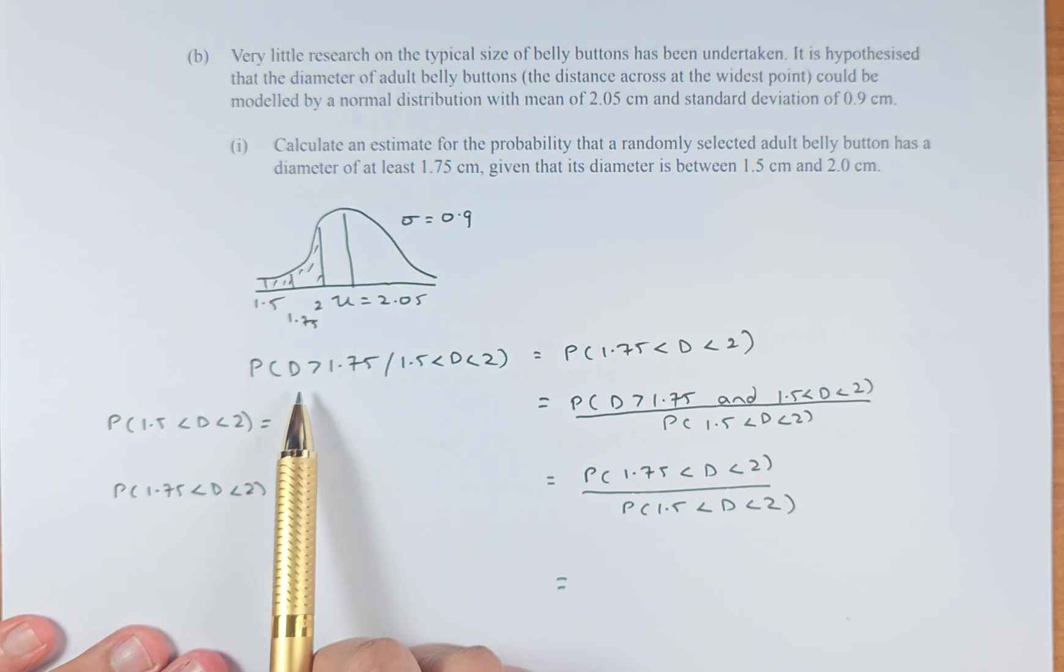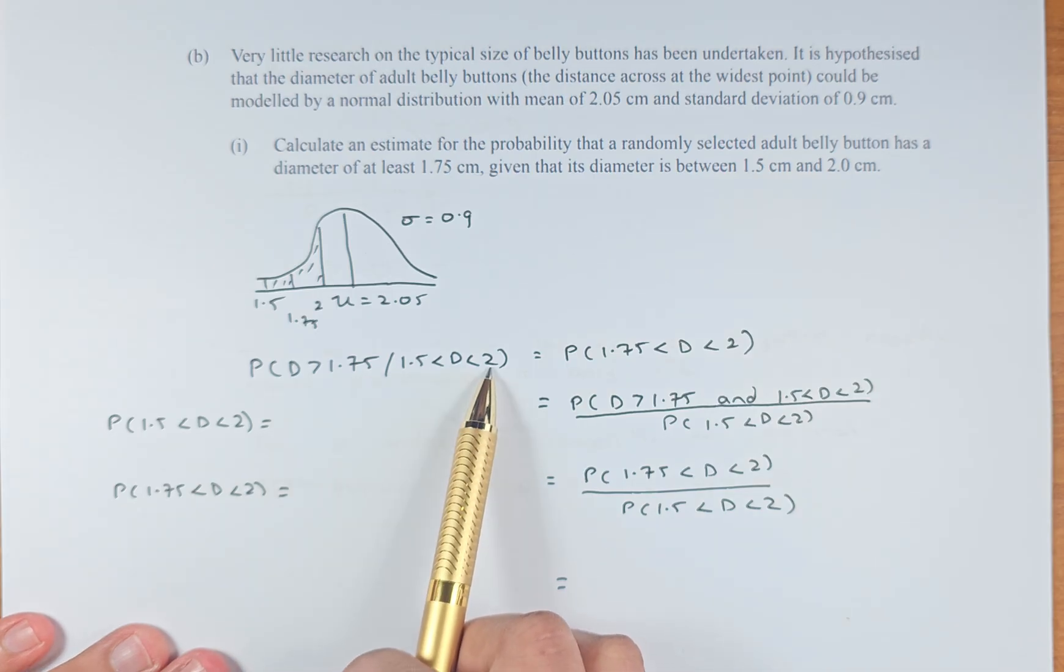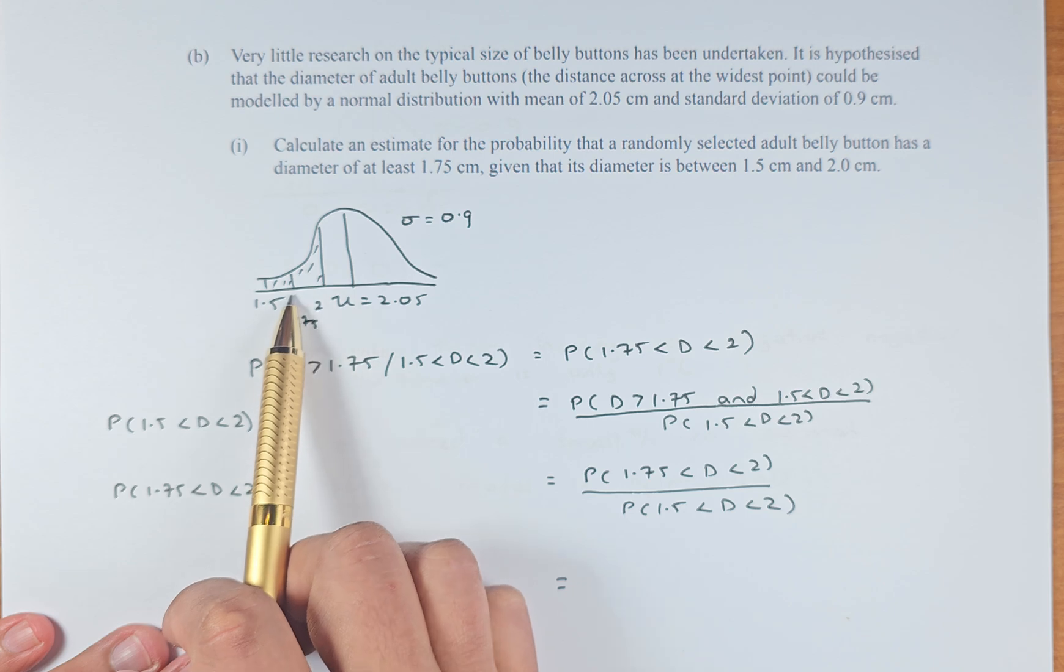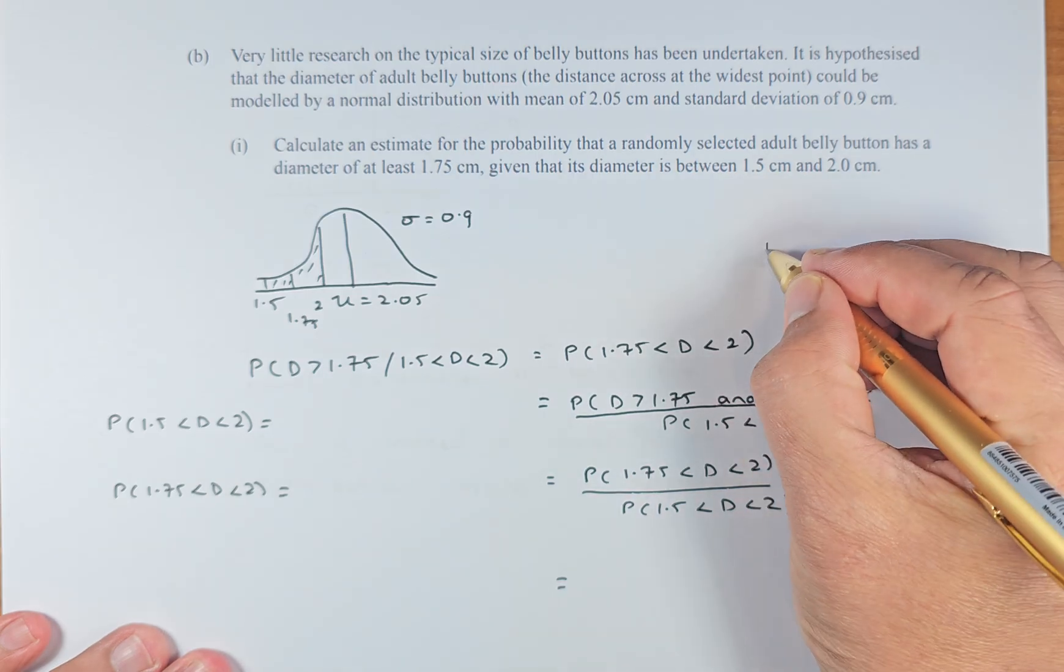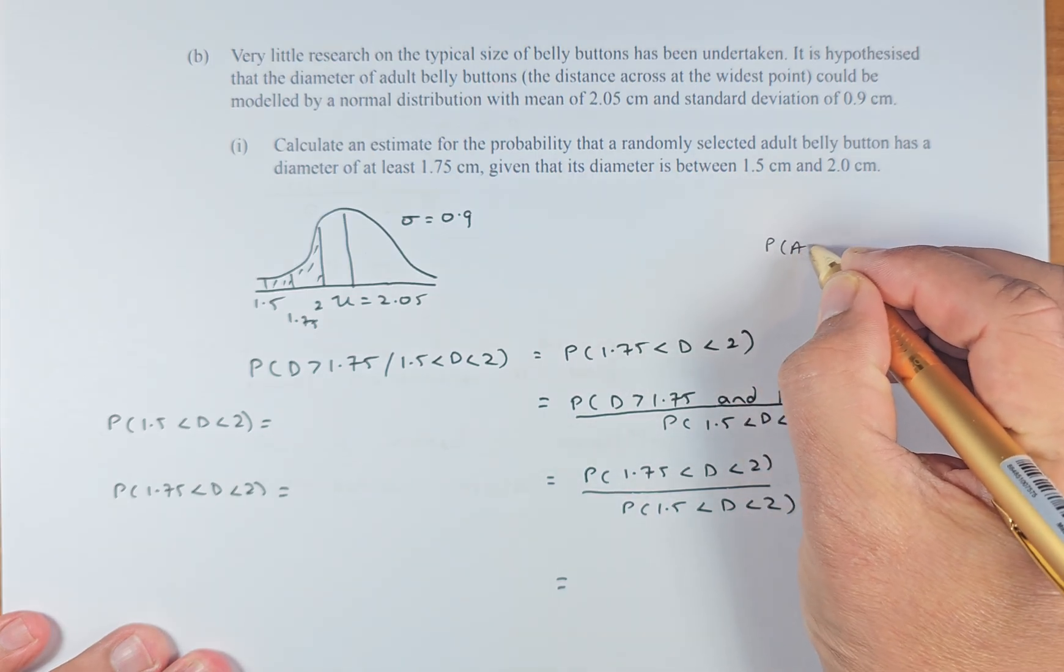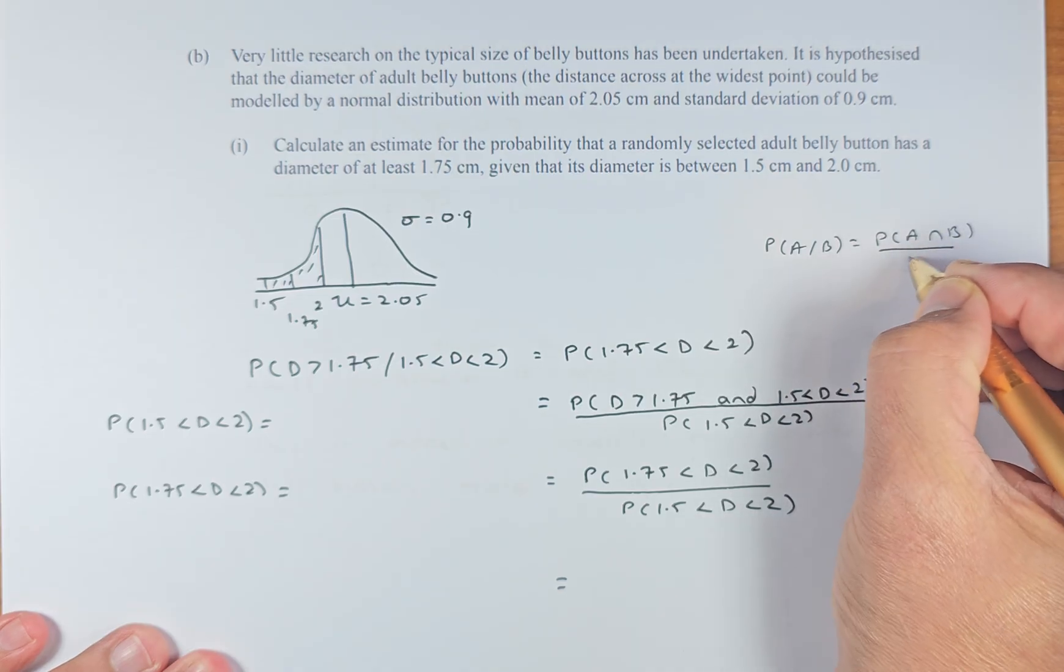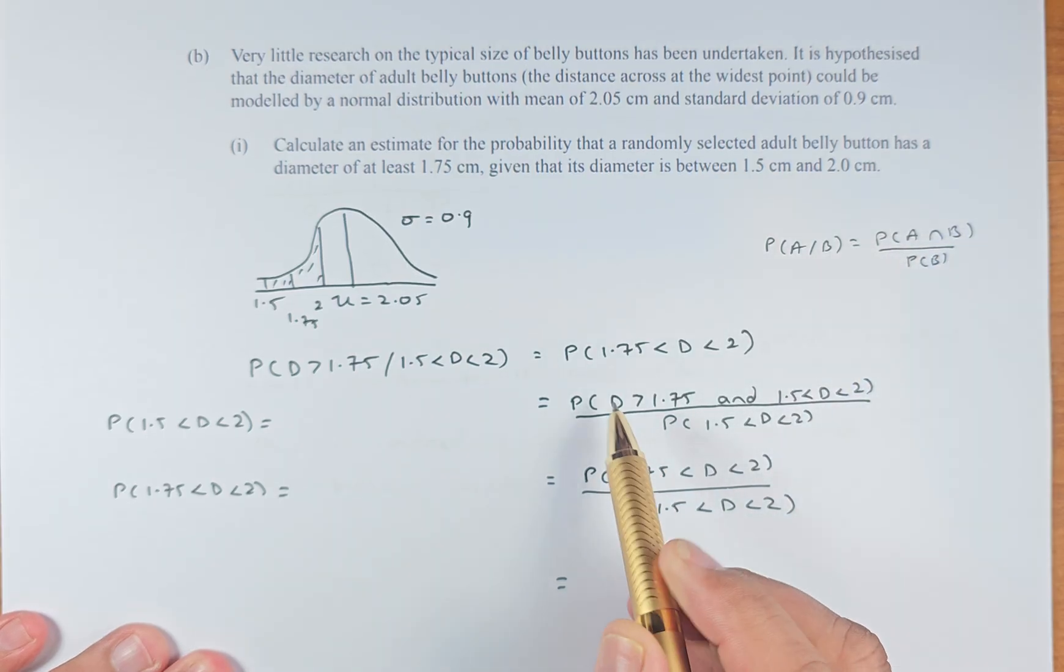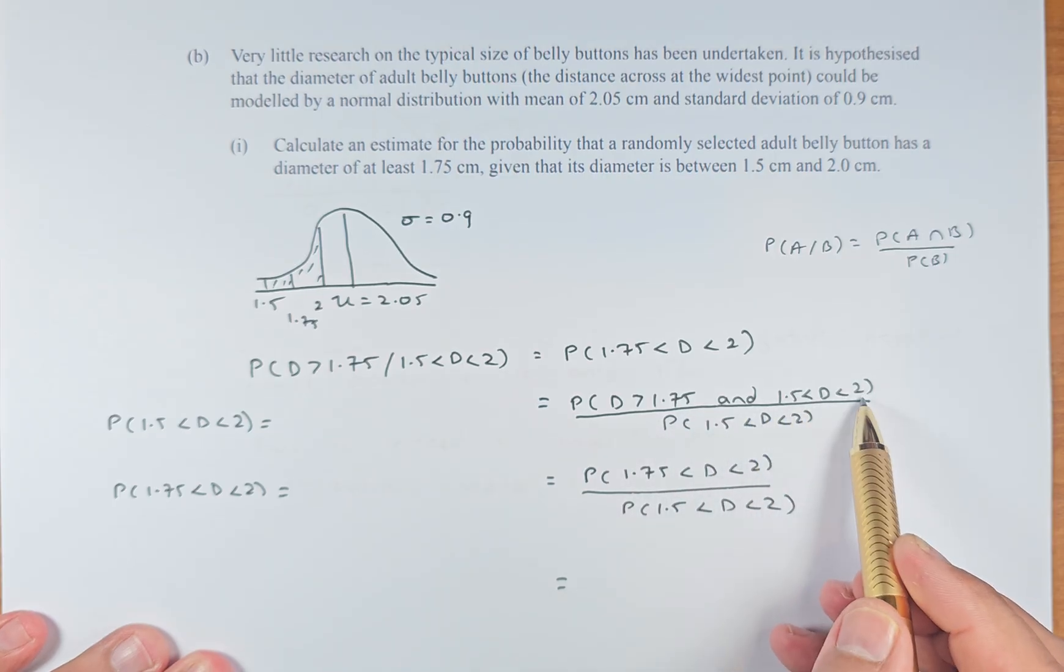So probability of diameter greater than 1.75 given that it is between 1.5 and 2 cm. So 1.5 and 2 cm has 1.75 in the middle. So we need to know that it is going to be A and B. The formula is probability of A given B equals probability of A and B divided by probability of B. So that's how we calculate.